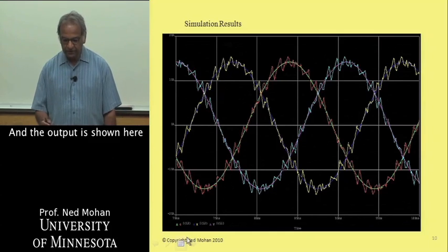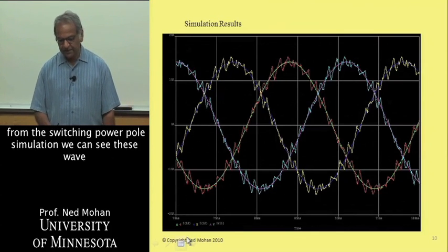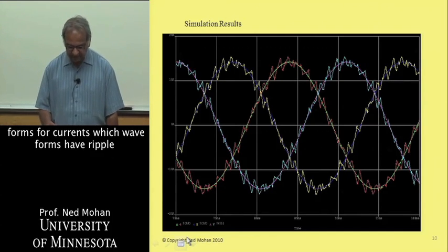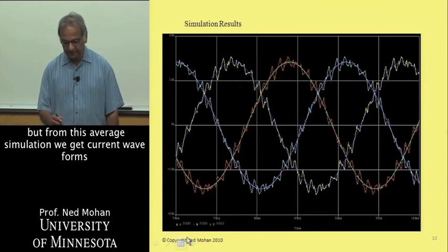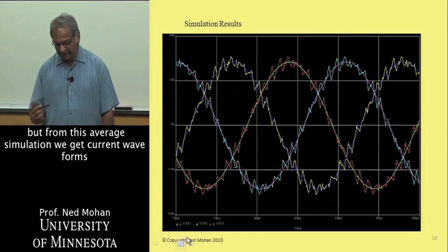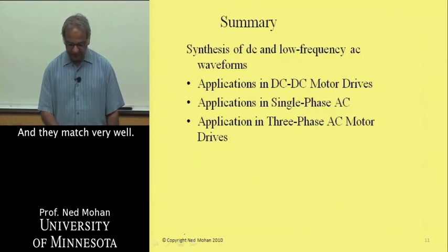The output is shown here. From the switching power pole simulation, we see current waveforms which have ripple, whereas from this average simulation we get current waveforms without the ripple. They match very well.